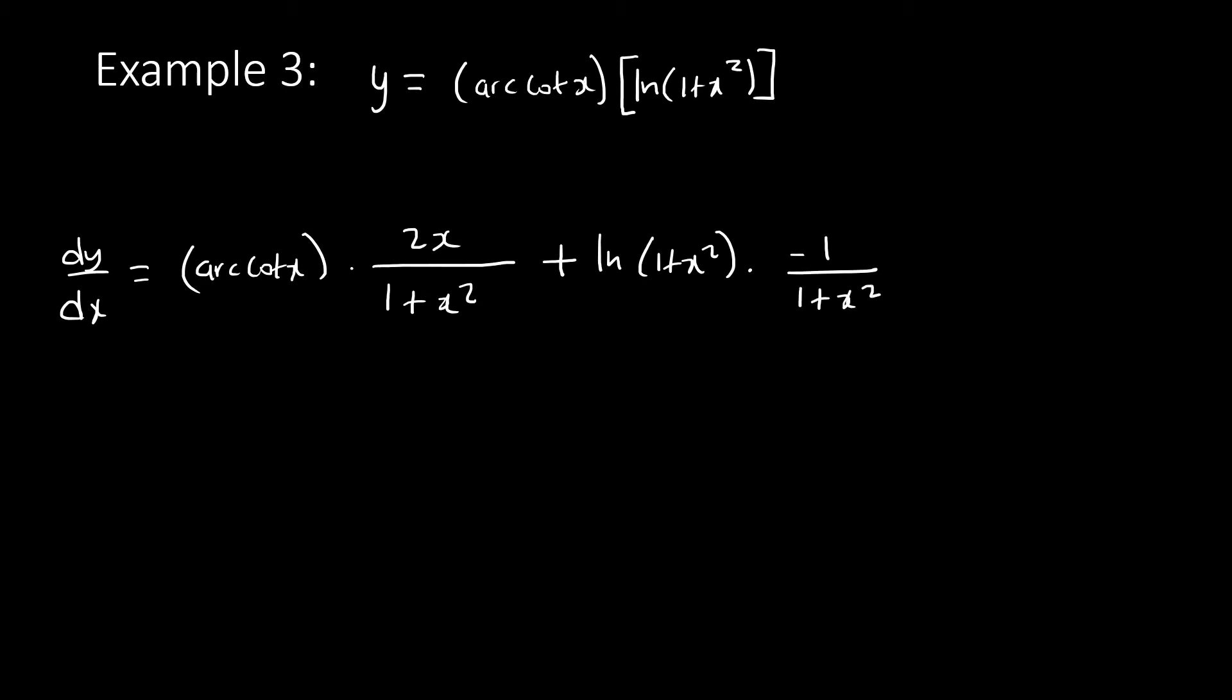If you check arccot in your formula sheet, it's minus 1 over (1 + x²). This 1 + x² and this will never cancel because this one is inside ln. That's why I'm saying avoid simplifying, just leave it as it is.